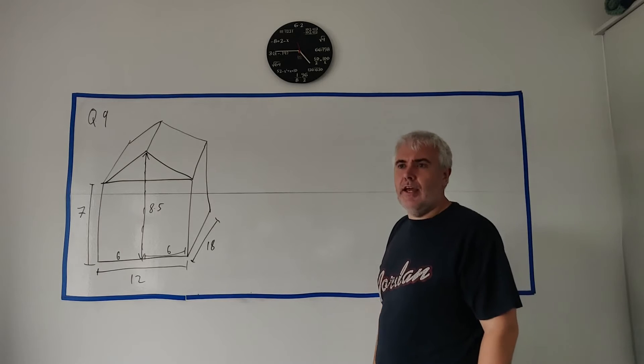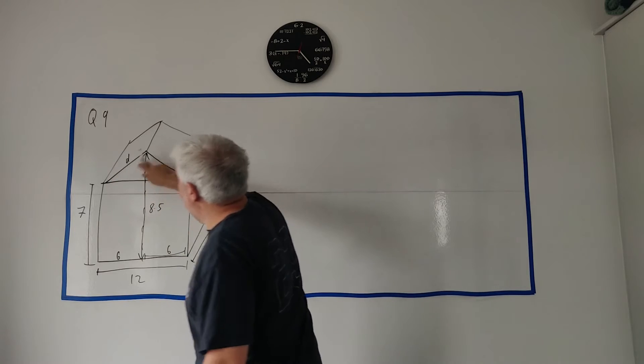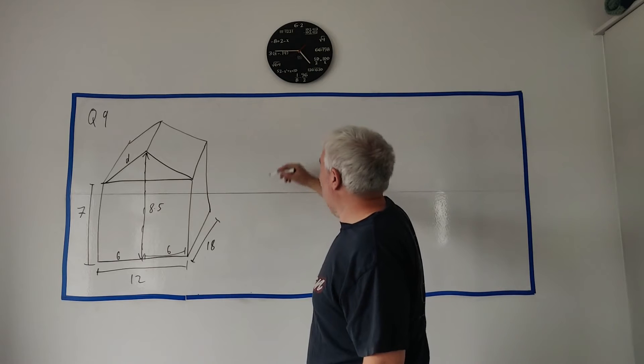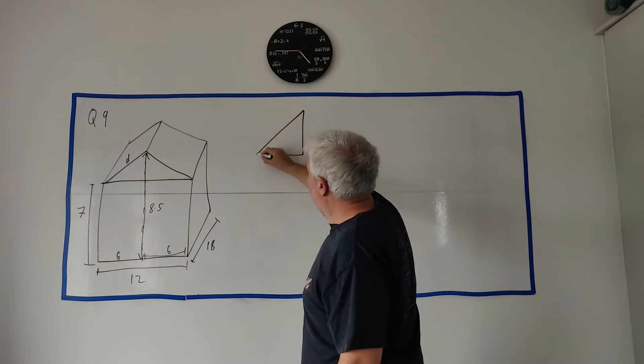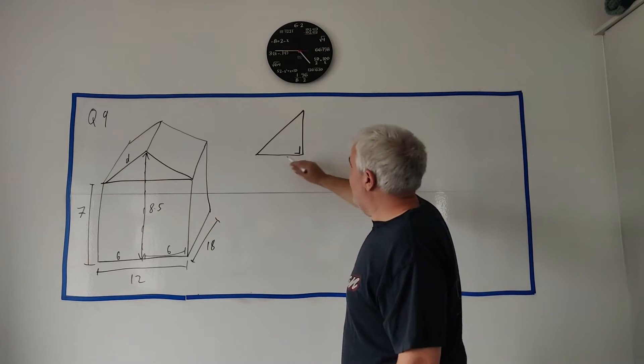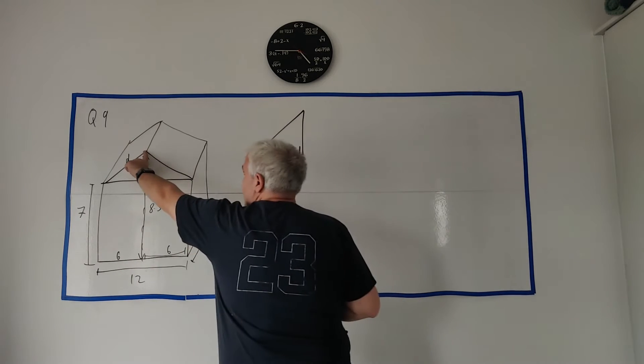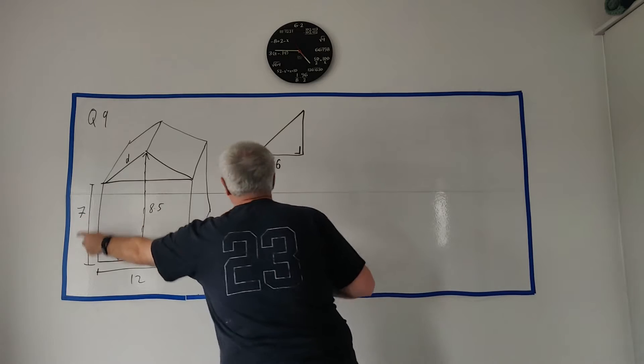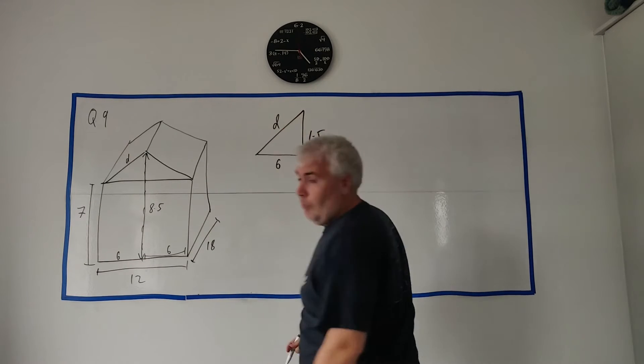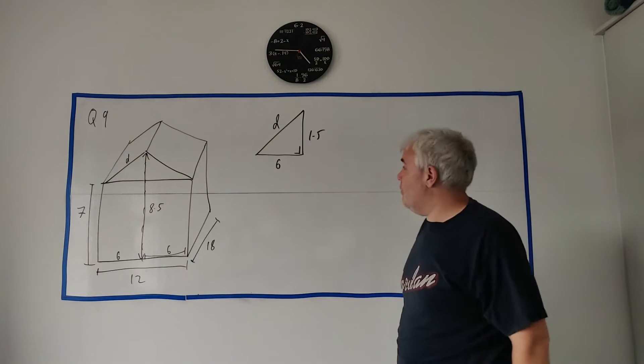Okay, part C. They asked us to use Pythagoras' theorem to find this length here, D. The length up here. So, to do that, I'm going to draw the triangle again. Well, I'm only going to draw part of it. I'm going to draw this small triangle here. It's a right angle. The width, the base of it here, is 6. The height of it here is the difference between 8.5 and 7 is 1.5. And D is what we're looking for.